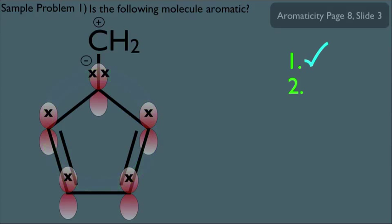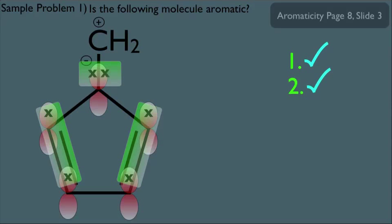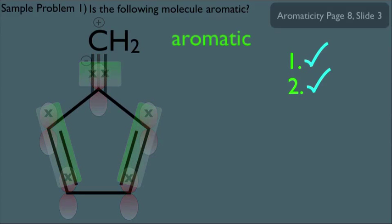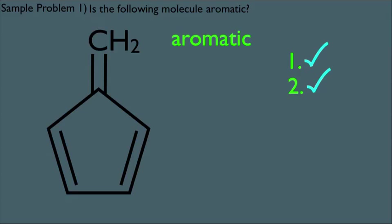Now what about the second criterion? Counting our pairs, we end up with three pairs of pi electrons. That's an odd number, so the second criterion is met. Therefore, this molecule is definitely aromatic. Remember, this sticks to the maxim that if a molecule can be aromatic, it will be aromatic — in other words, it will participate in any kind of resonance that will turn the molecule into a full-fledged aromatic molecule.